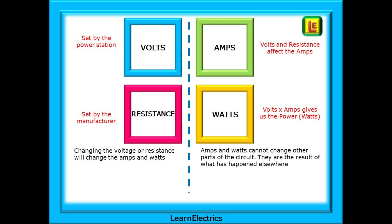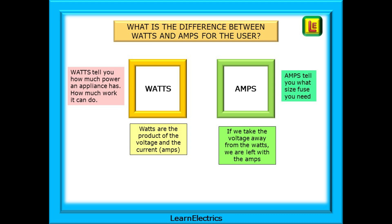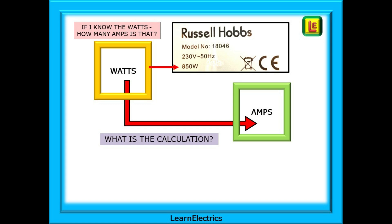Just to confirm this, something else has to happen first before the watts or amps will change. What is the difference between watts and amps as far as the user is concerned? Watts tell us how much power an appliance has to do its job. A one kilowatt room heater will not heat a room as quickly as a two kilowatt model, and that 800 watt camping kettle will take a lot longer to boil the water than your 3000 watt kitchen kettle. Watts are the product of voltage and amps multiplied together, but we need to know the amps to determine the correct fuse size for safety. We buy fuses in amps, not in watts. If we take the voltage away from the watts by dividing watts by voltage, we are left with the amps. So if we know the watts by looking at the rating plate on the appliance, what is the calculation that we should use?